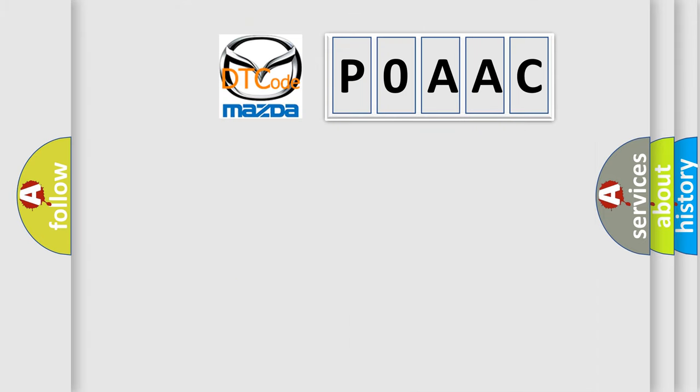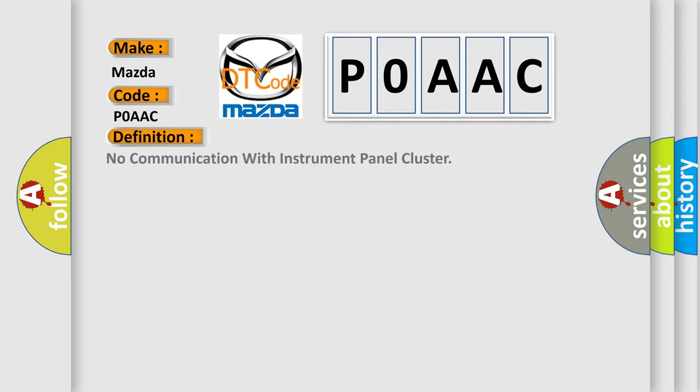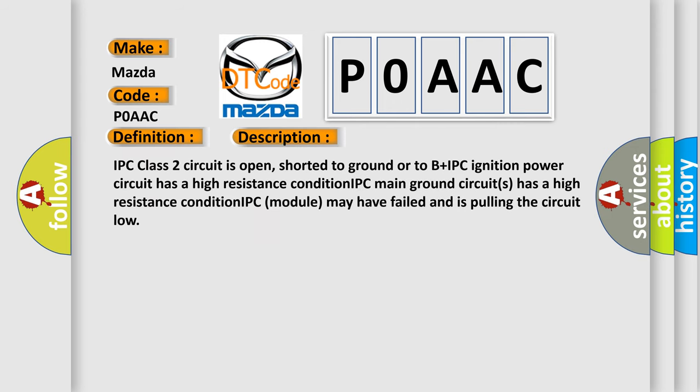So, what does the diagnostic trouble code P0AAC interpret specifically for Mazda car manufacturers? The basic definition is: No communication with instrument panel cluster. This is a short description of this DTC code: IPC class 2 circuit is open, shorted to ground or to B+. IPC ignition power circuit has a high resistance condition. IPC module may have failed and is pulling the circuit low.